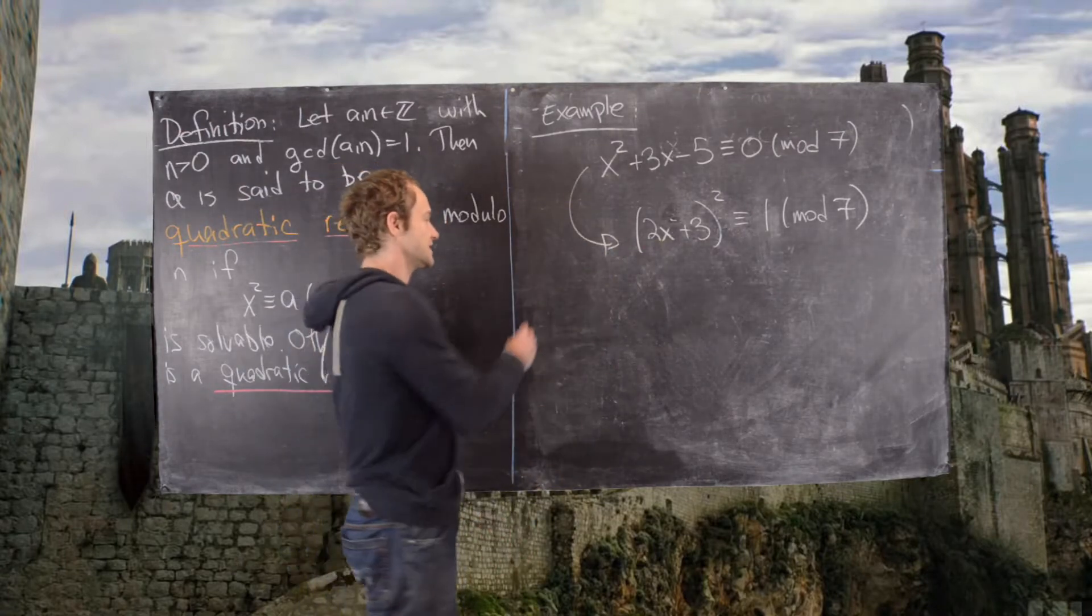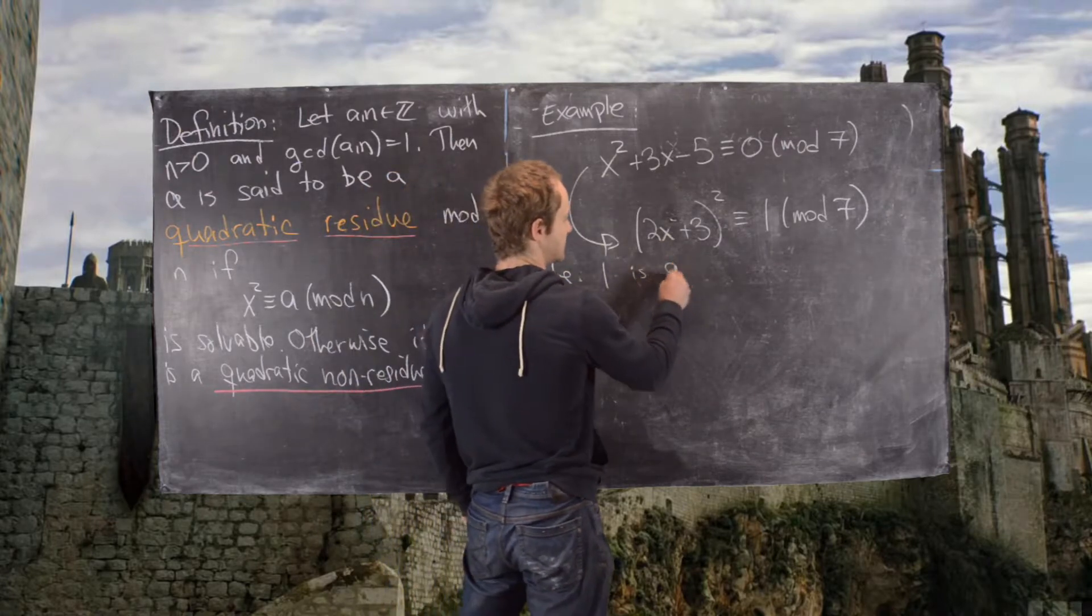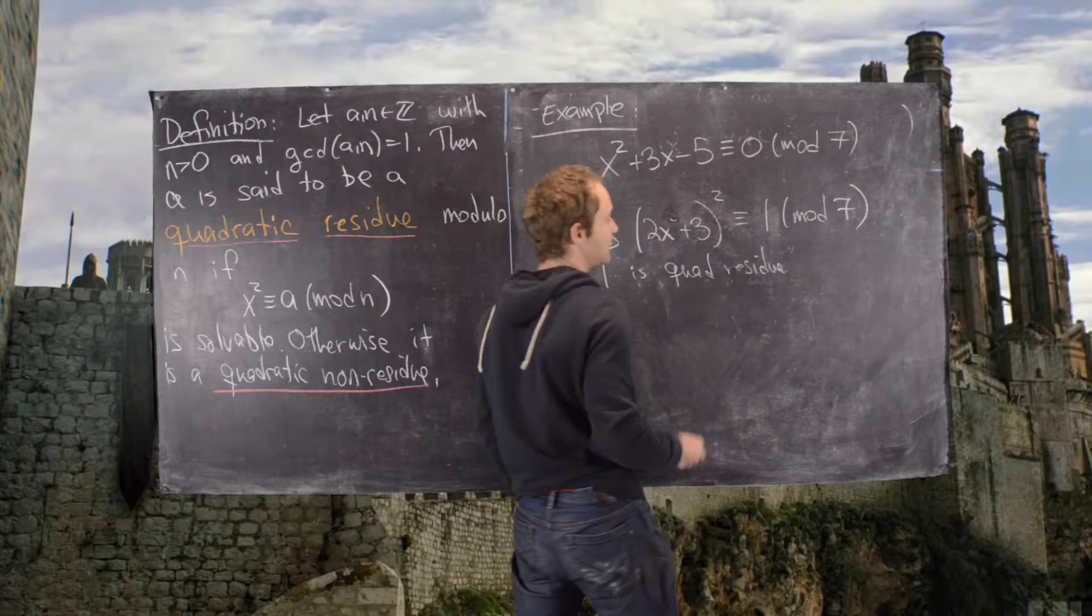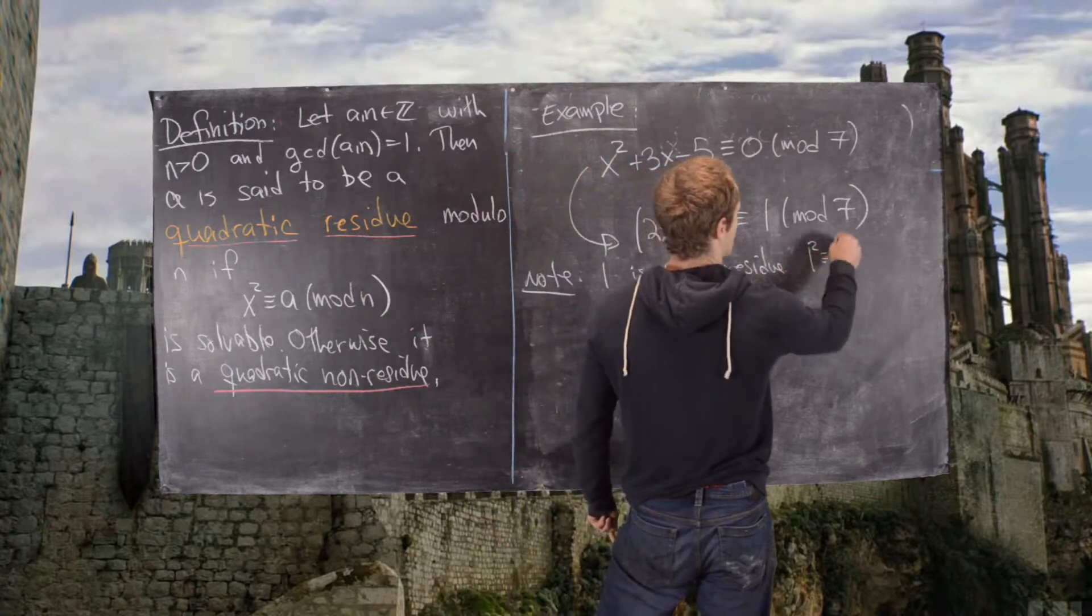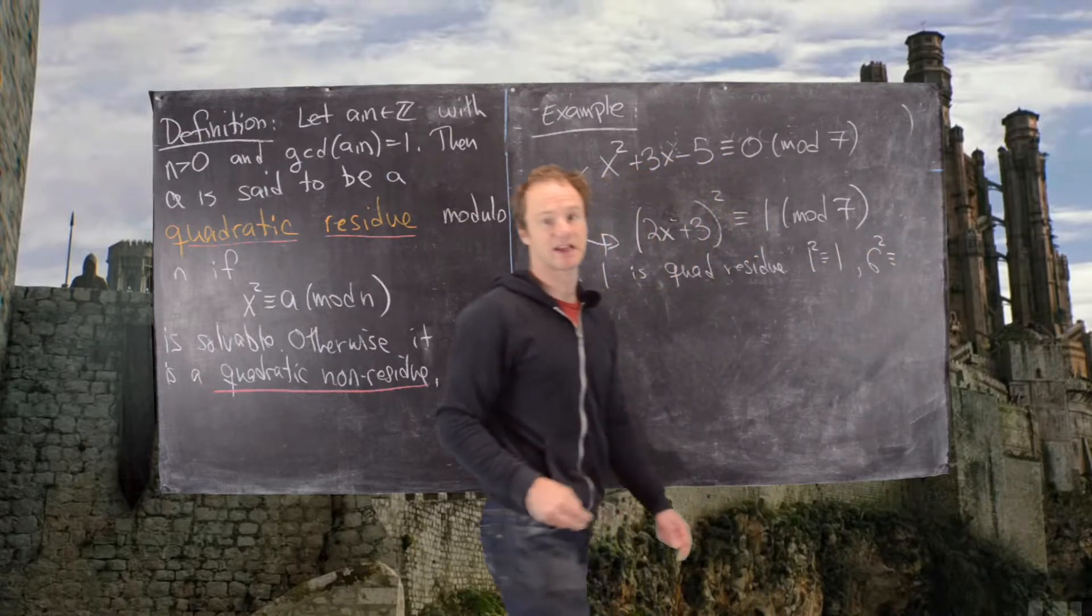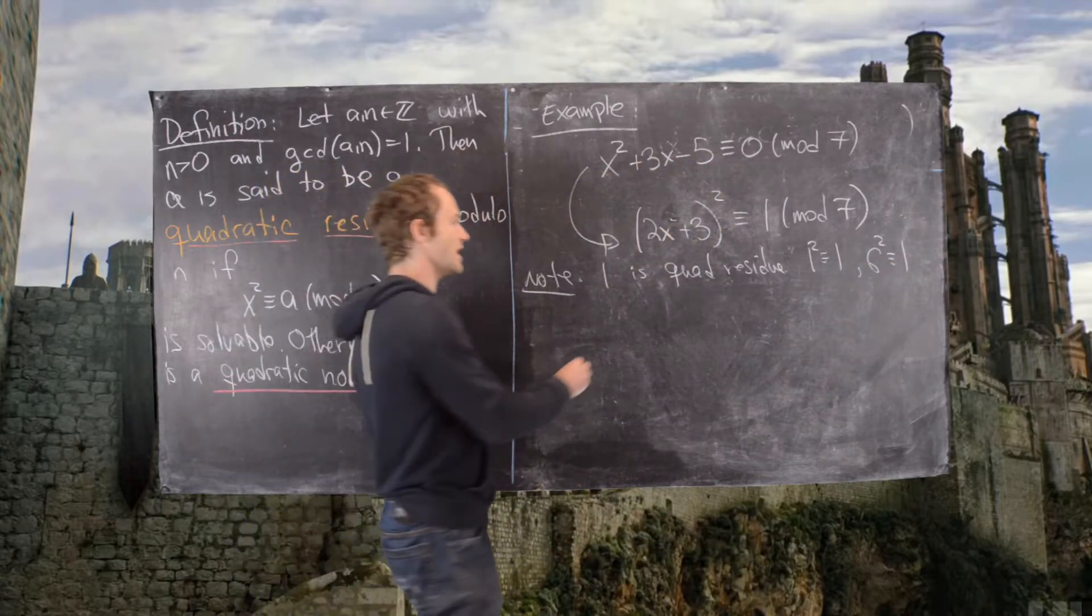So now we notice that 1 is a quadratic residue. In fact, 1 squared is congruent to 1 and 6 squared is 36, which is congruent to 1. So that means we get two solutions to this equation.